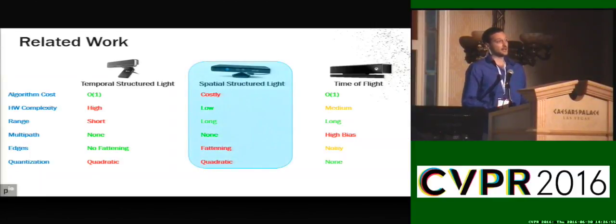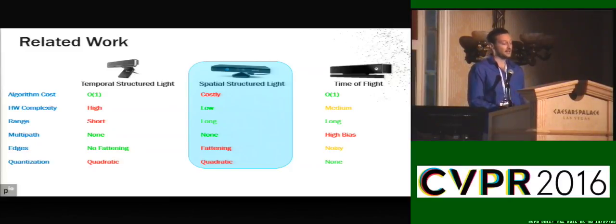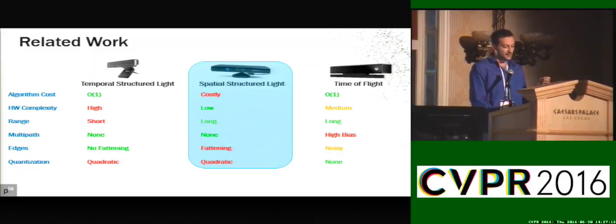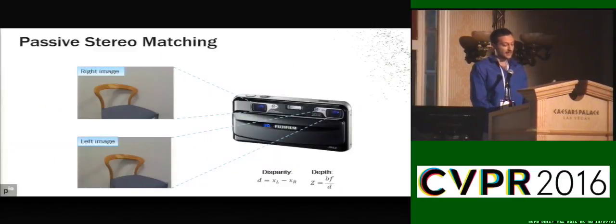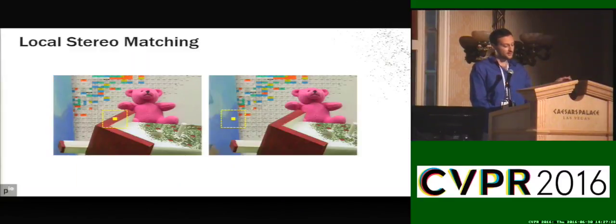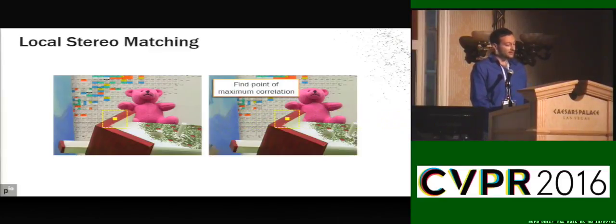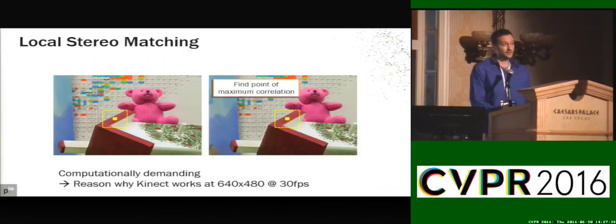We like spatial structural light because it's very cheap — you can use off-the-shelf components: just an IR camera plus a dot pattern projector. But the problem is the computational cost — it's huge. People used to cast the spatial structural light problem into a stereo matching one. For those unfamiliar, stereo matching takes a left and right image, and for a pixel on the left image, tests multiple hypotheses on the right image until it finds the most correlated one. This is very demanding, which is one reason why Kinect runs at low resolution at 30 frames per second.